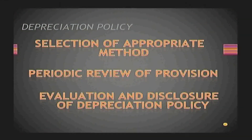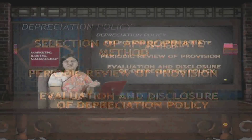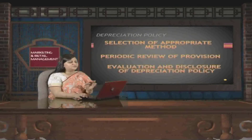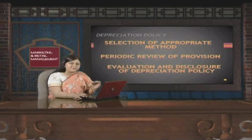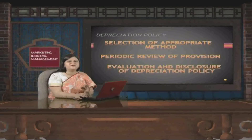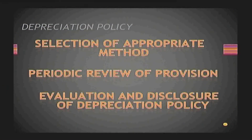Now let us understand another aspect: depreciation policy. The first important parameter is the selection of an appropriate method. Depending upon the nature and use of the asset, a depreciation method has to be adopted. Once adopted, it needs to be disclosed in the books of accounts in the notes to the financial statements — stating whether the diminishing method, straight line method, or replacement method has been used — and applied consistently in accordance with accounting policies and principles.